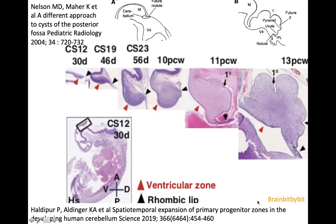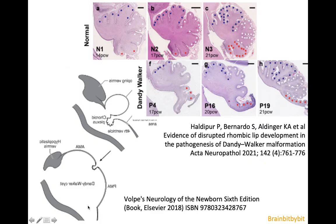This is also the normal development. Two schematic drawings and histologic specimens at the same time points show how the developing cerebellum progressively covers the anterior membranous area growing from the rhombic lips. The same group also published an article in 2021 where they compare normal development with Dandy-Walker, and there is a problem with the rhombic lip in Dandy-Walker malformation.